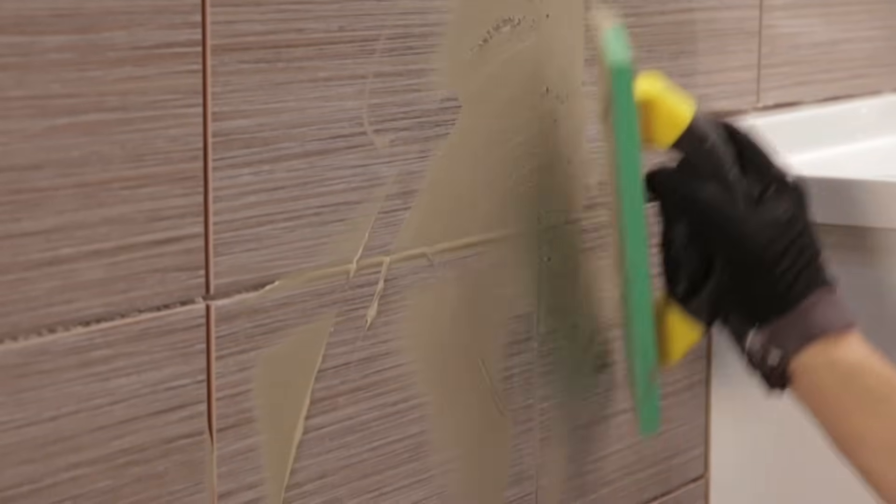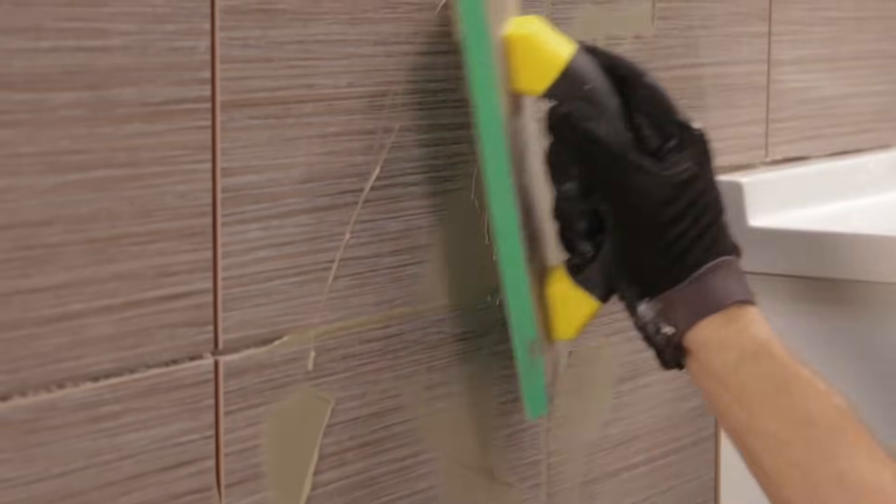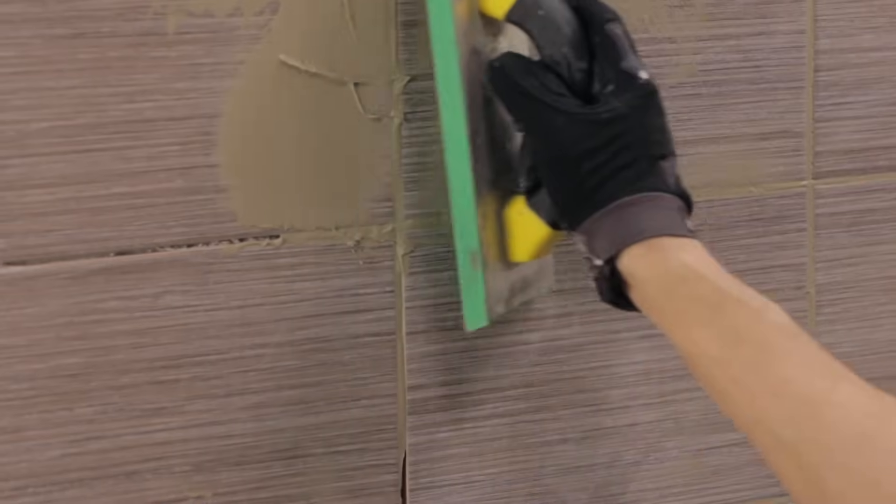Pour some of the grout directly onto the tiles and work it into the joints with a rubber float. Apply the grout section by section, covering a surface no bigger than 10 square feet at a time. Keep the float at a 45-degree angle.